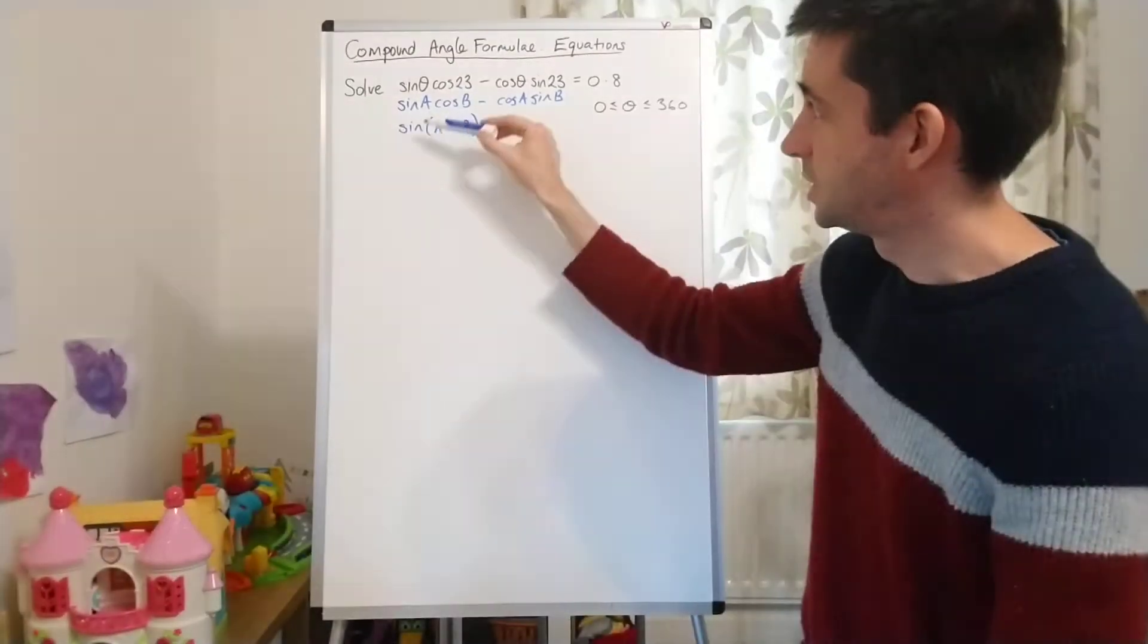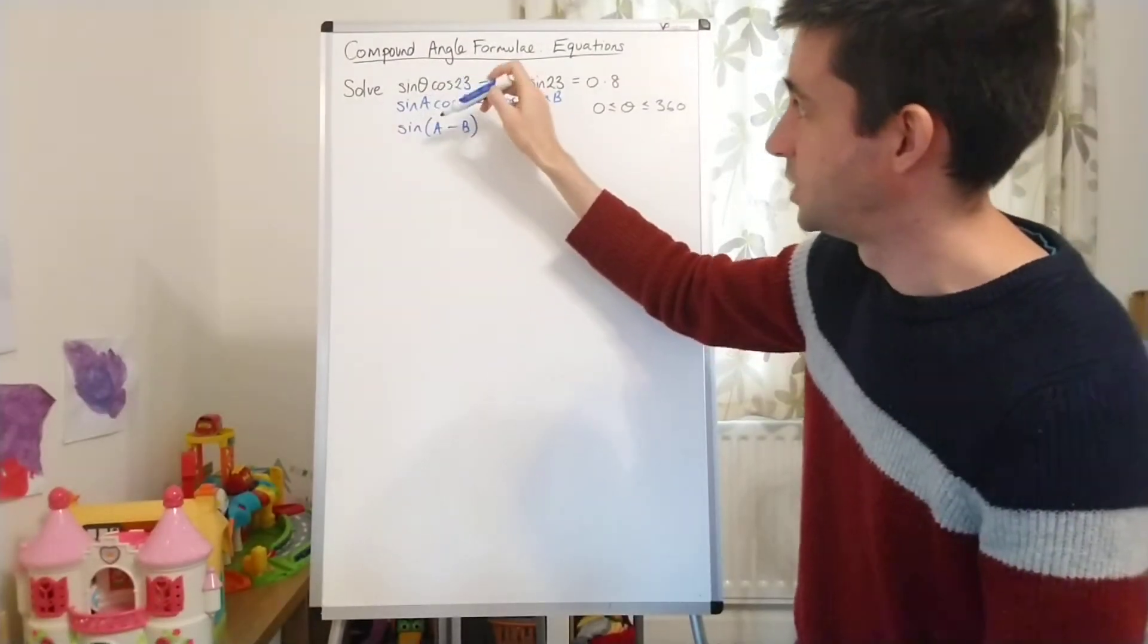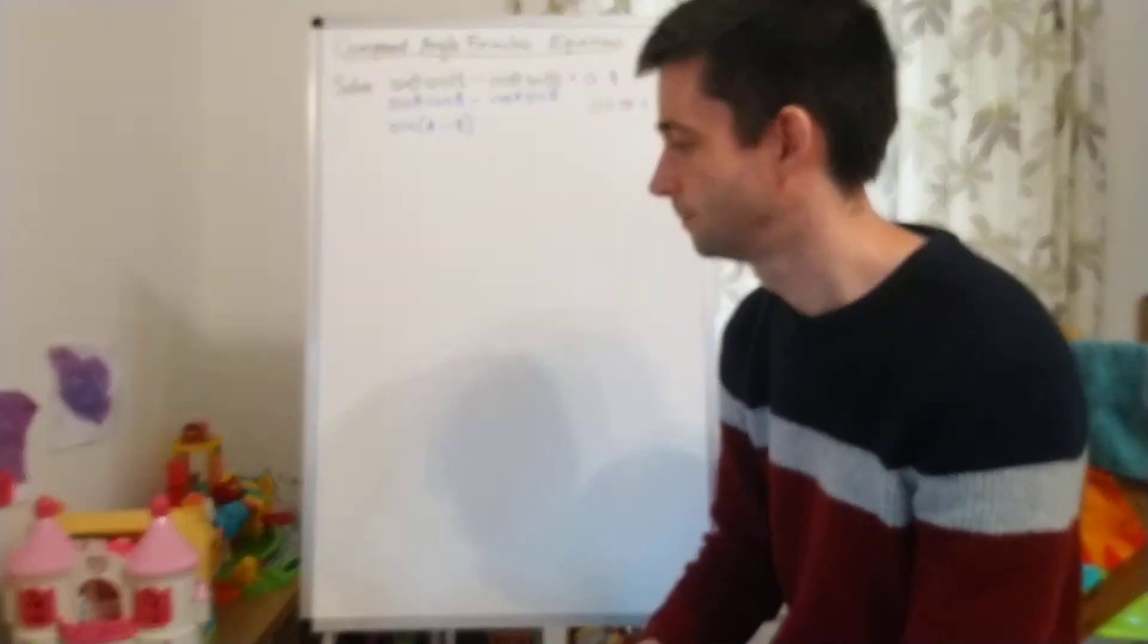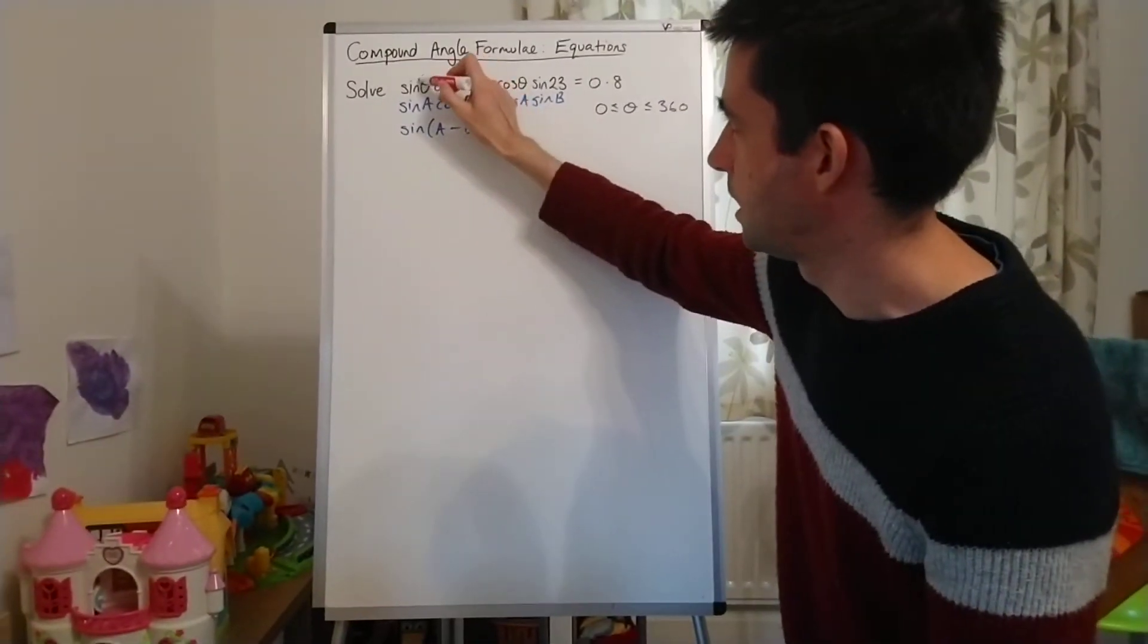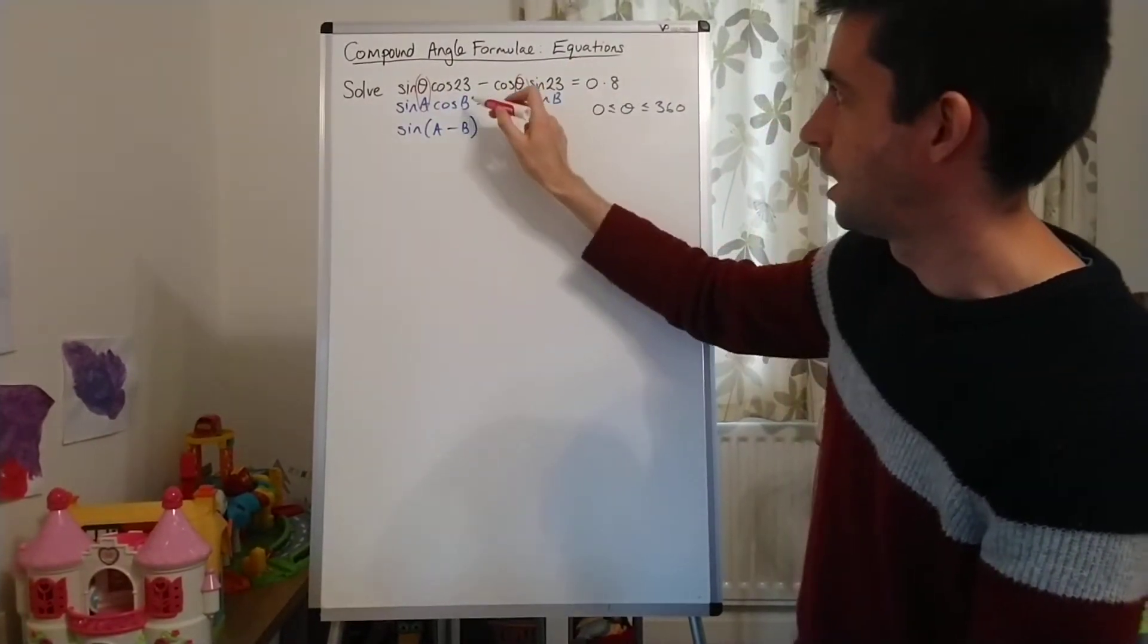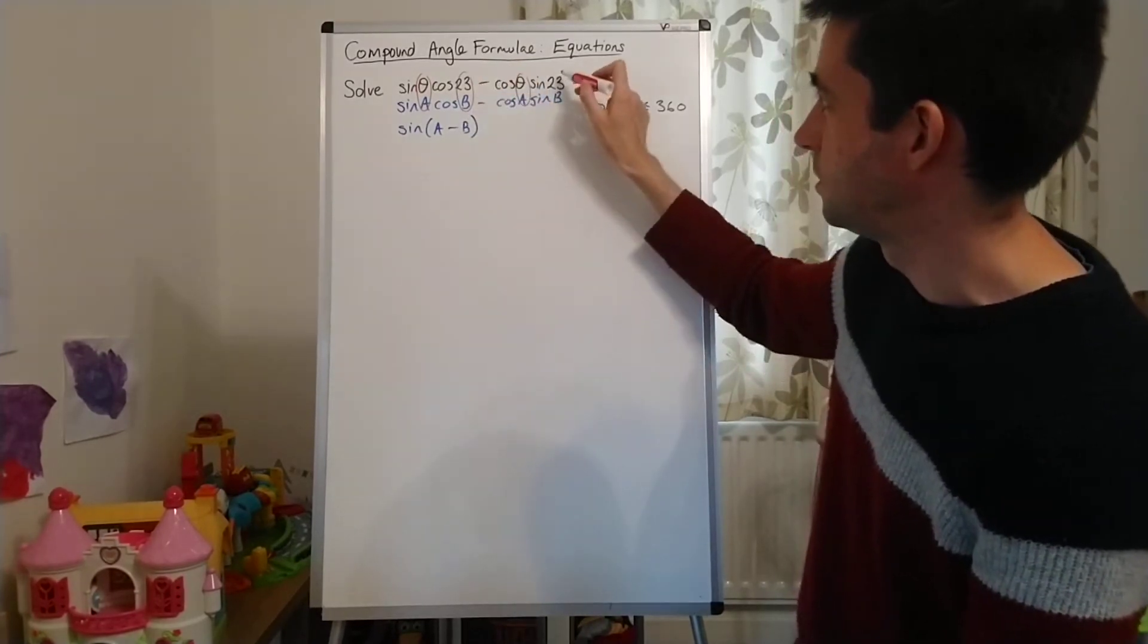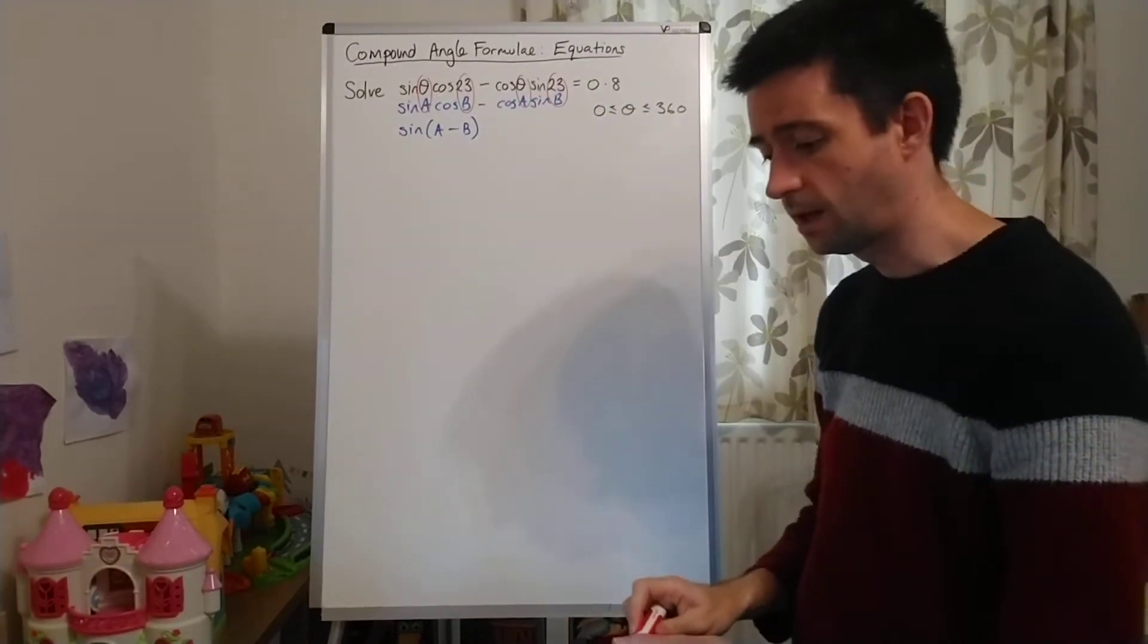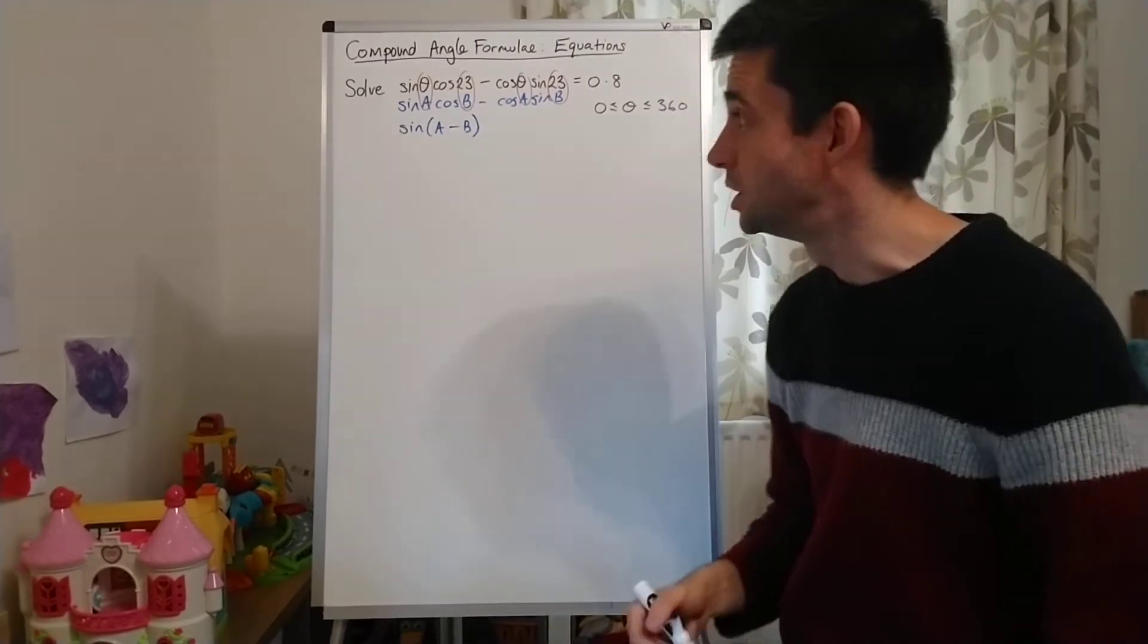Now what you'll notice is that I've got A wherever I've written theta. So I've got A matched with theta there and there, and I've got B matched with 23 there and there.